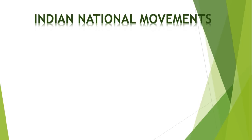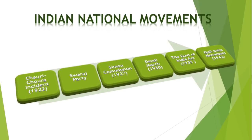Next is the Chauri Chaura Incident, 1922. Before Gandhi could launch a civil disobedience movement, a mob in Chauri Chaura — a place near Gorakhpur in UP — clashed with police and opened fire. In retaliation, the mob burned the police station and killed 22 persons. This compelled Gandhiji to call off the civil disobedience movement on February 12, 1922.